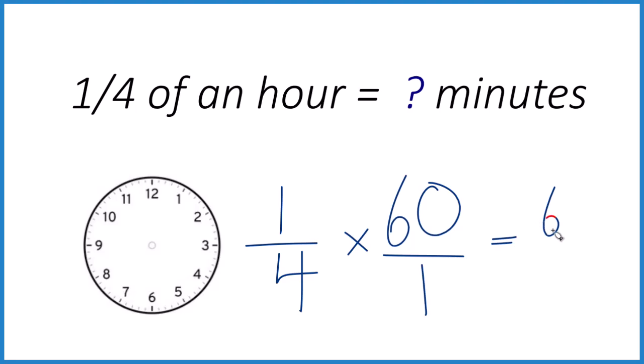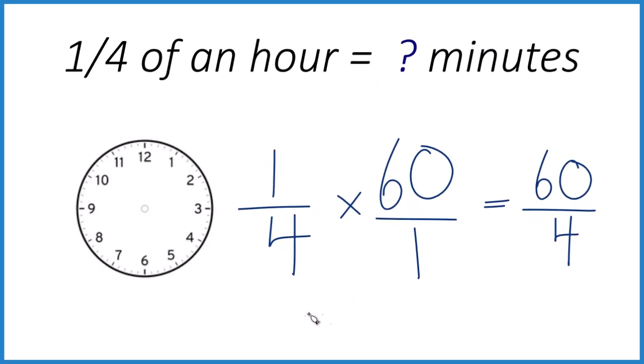1 times 60, that is 60, and 4 times 1, that is 4. If you divide 60 by 4, you end up with 15, and that's 15 minutes.